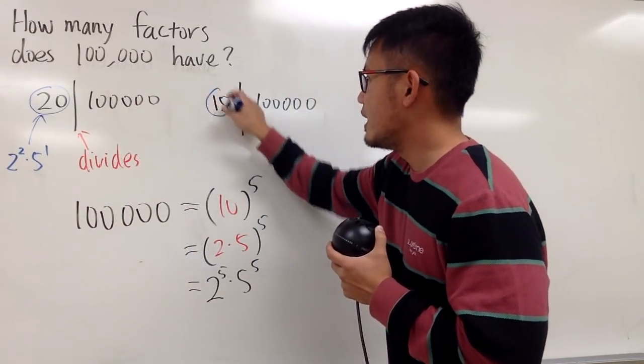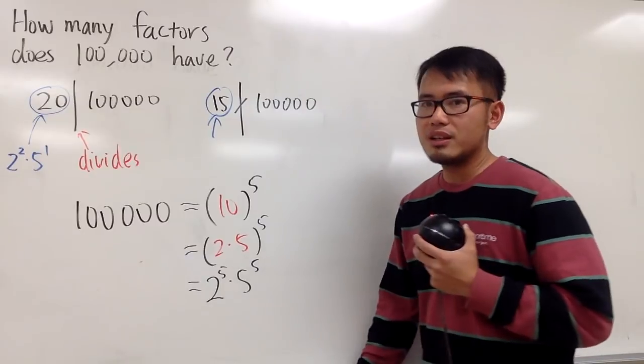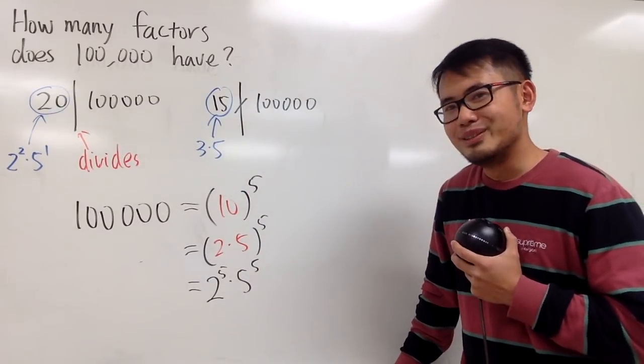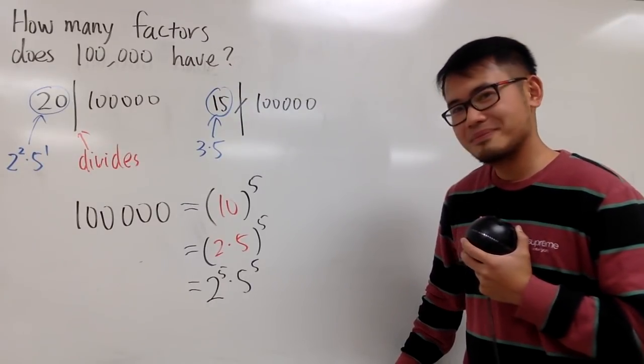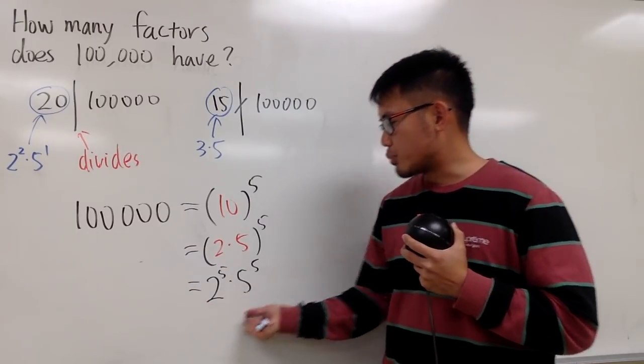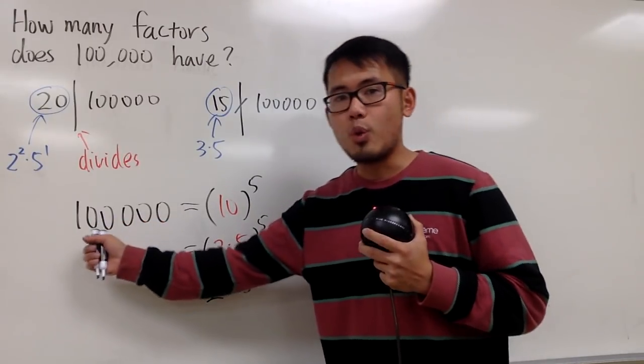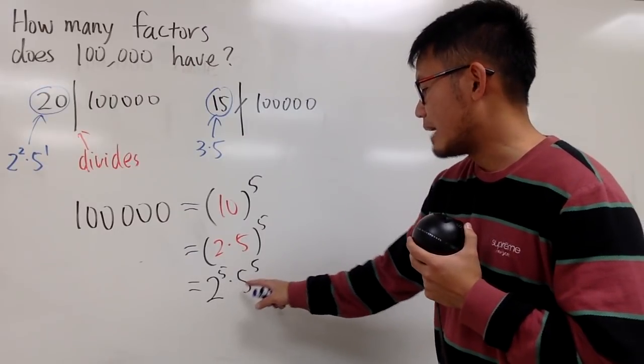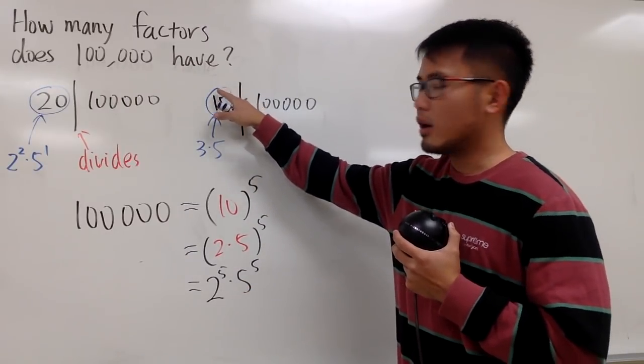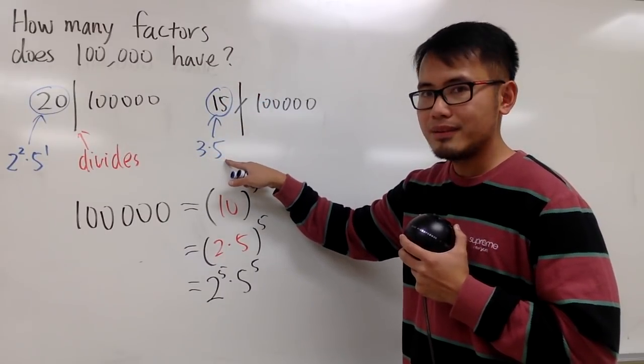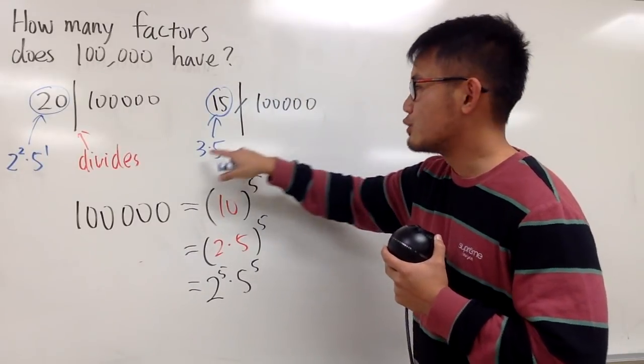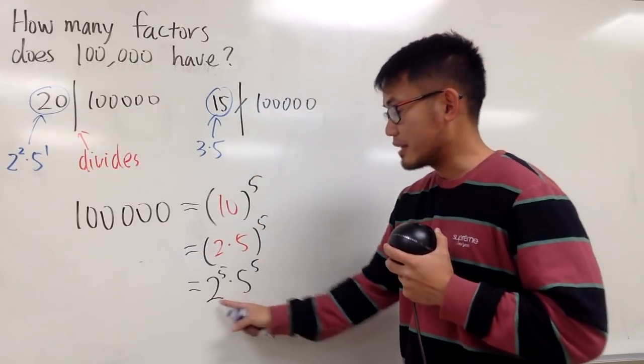Well, if you look at 15, 15 is 3 times 5. Do we see something interesting? Yes, isn't it? First of all, this right here is the prime factorization of the number 100,000. It's 2 to the fifth times 5 to the fifth. Well, if you look at the prime factorization of this number, which is 3 times 5. You see, 5 does go into this, but 3 does not go into this, because 3 is not here.